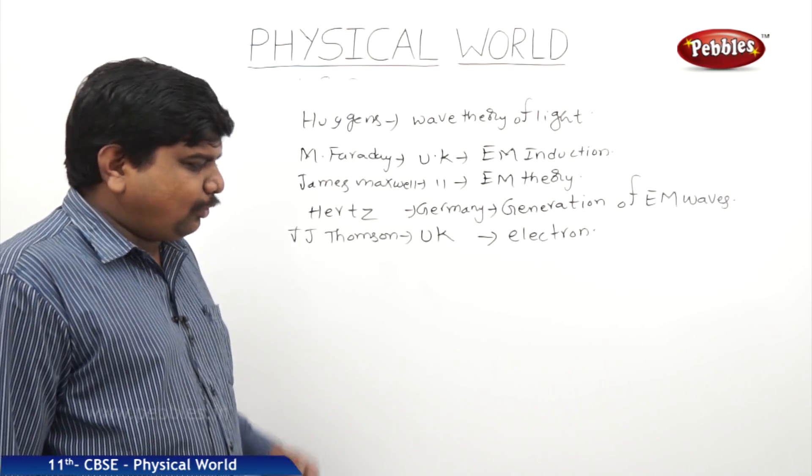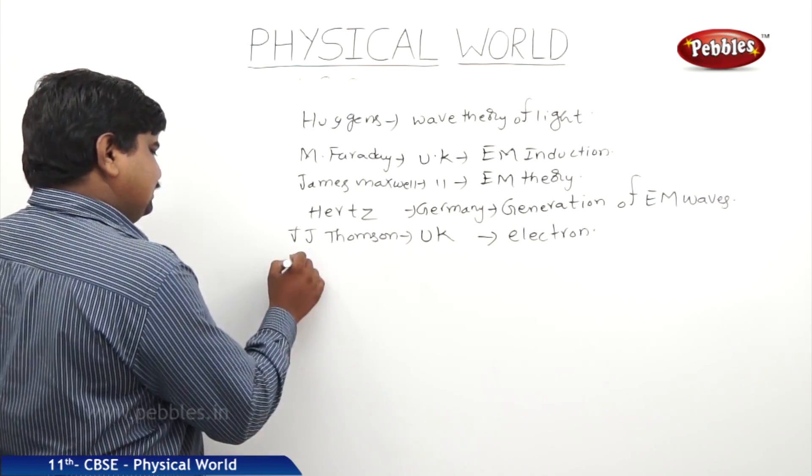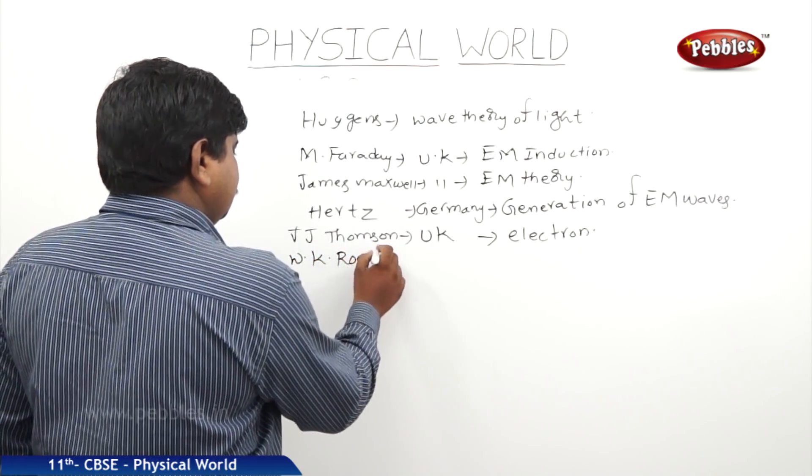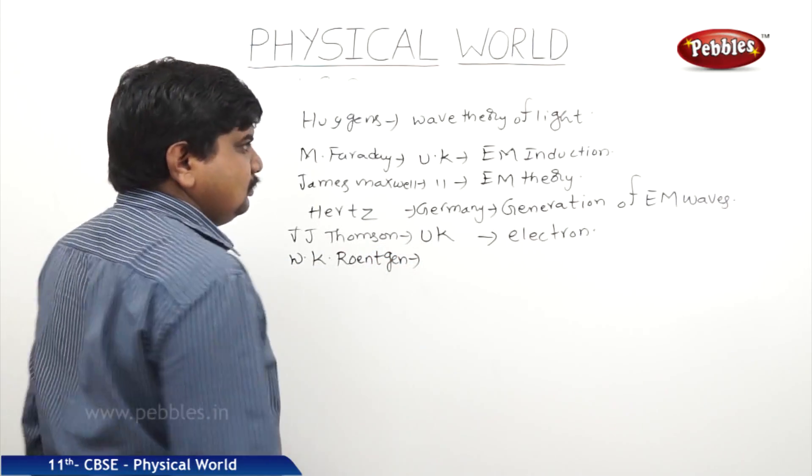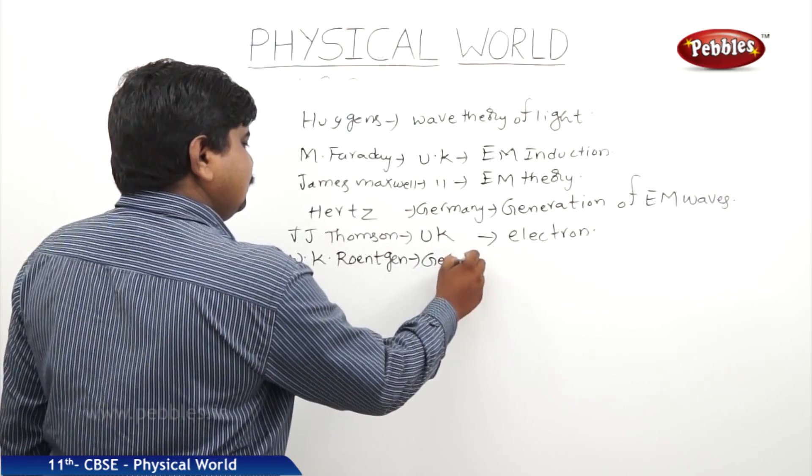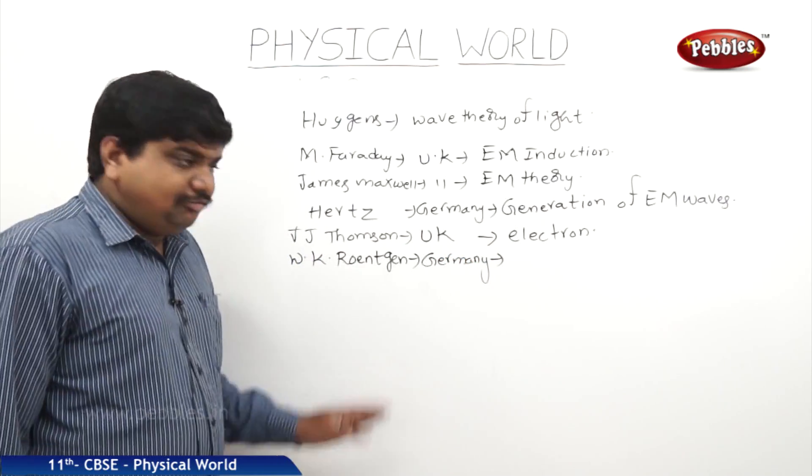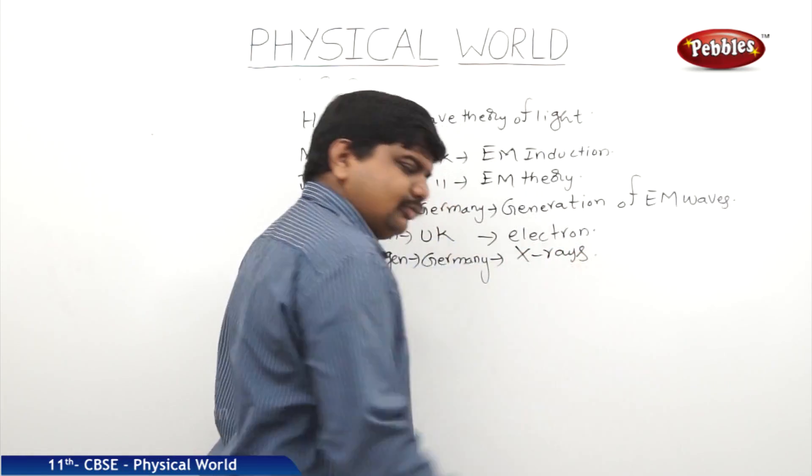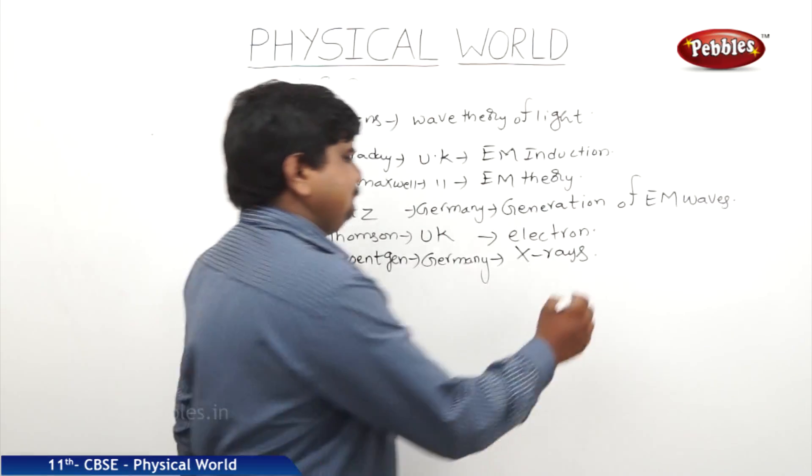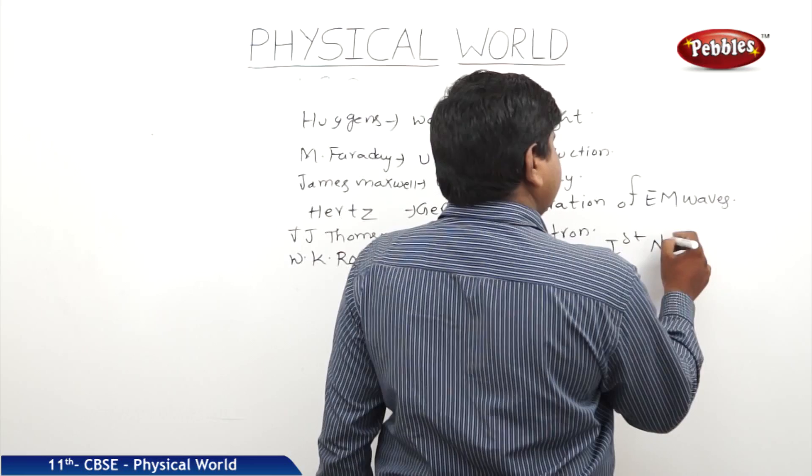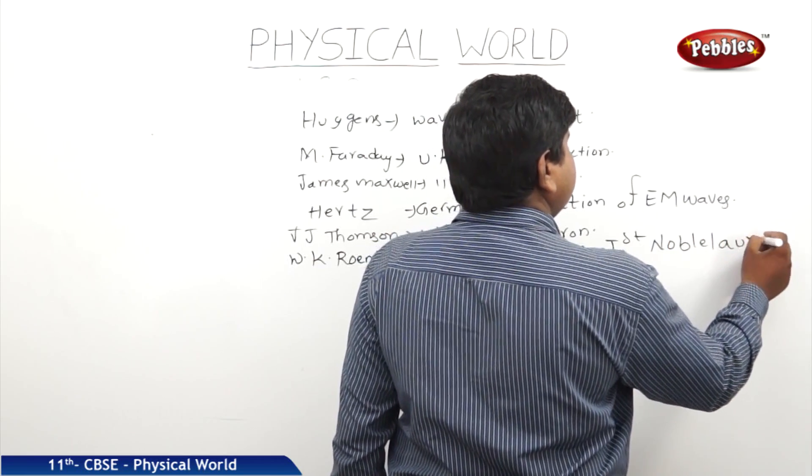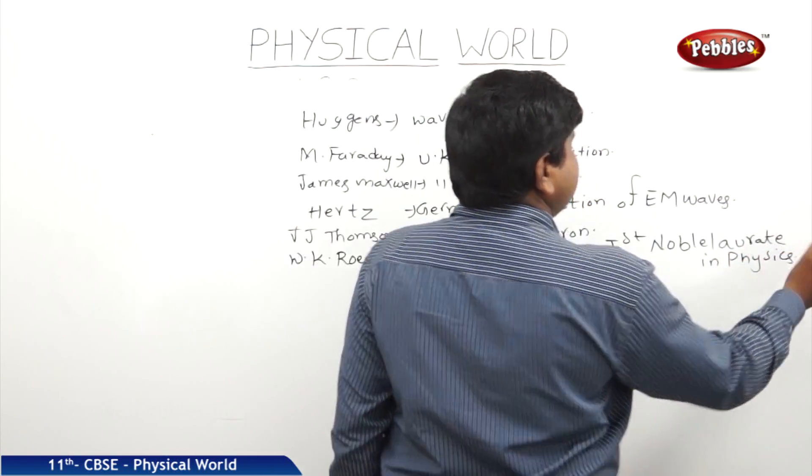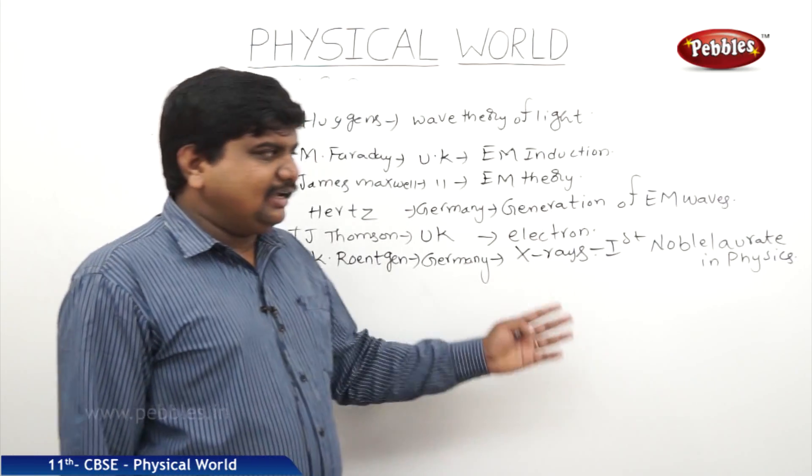The next scientist was W.K. Röntgen, he is also set up by William K. Röntgen who has discovered the X-rays. He is the first Nobel laureate in physics for his discovery of X-rays, which really changed the face of the medical field.